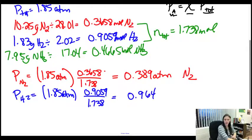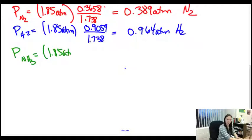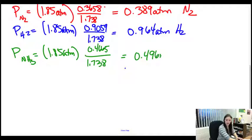I look at the last one, which is the pressure of NH3. I've got my 1.85 atmospheres, and I have 0.4665 moles divided by my 1.738. Divide and multiply, I get 0.496 atmospheres for the NH3. So again, if I add all these up I should get my total pressure of 1.85 or very close, depending on my rounding. Let's look at the next one. It's worded a little bit differently, and it's actually a little bit easier.